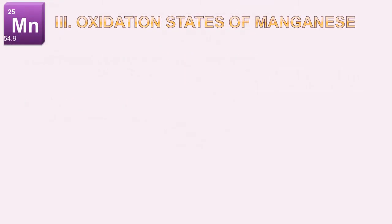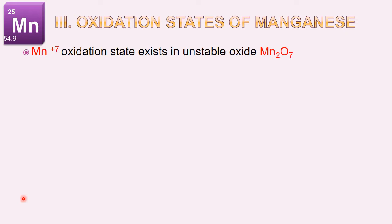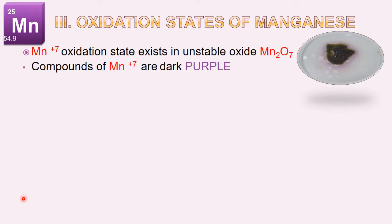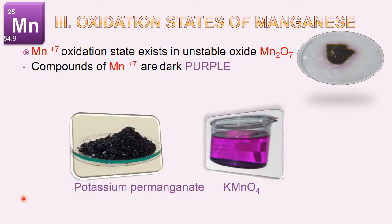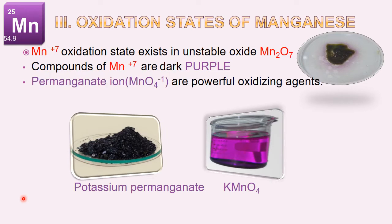The +7 oxidation state of manganese exists in the unstable manganese heptoxide. Compounds of manganese in the +7 state are dark purple in color — for example, potassium permanganate. Permanganate ions are powerful oxidizing agents, and this is another important point to remember for MCQs.